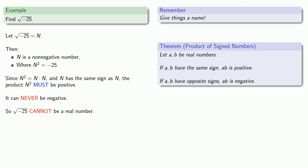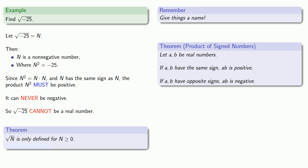This leads to an important result: the square root of n is only defined for n greater than or equal to zero — at least for now. Later on, we'll take a look at the square root of negative 25 and similar square roots.